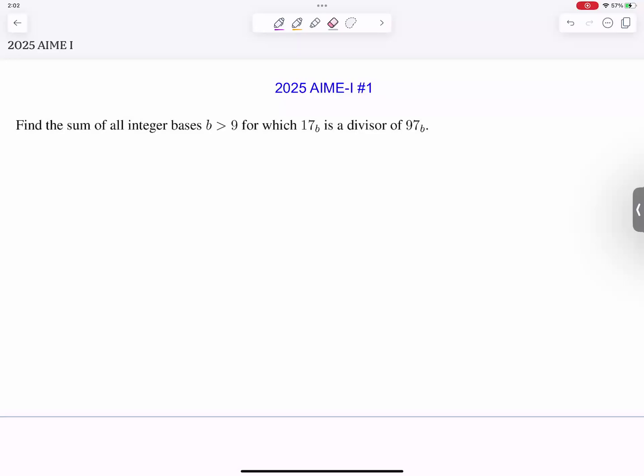Find the sum of all the integer bases b larger than 9 for which 17 in base b is a divisor of 97 in base b. When we write these numbers we get b plus 7 and 9b plus 7.